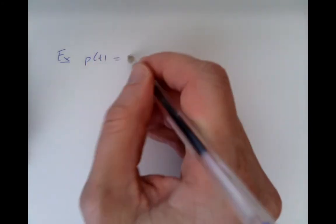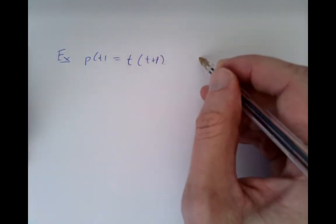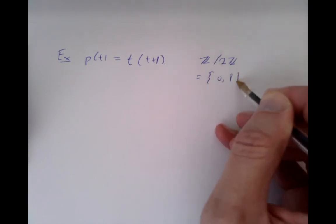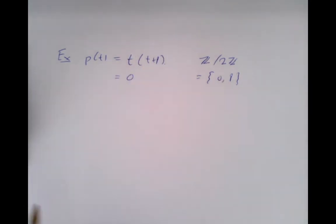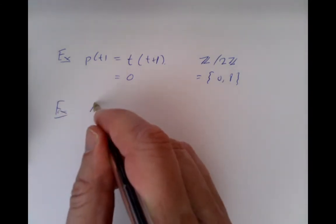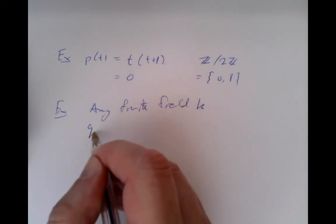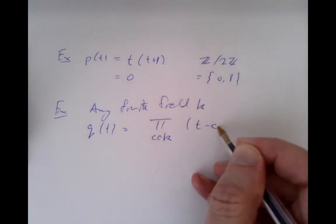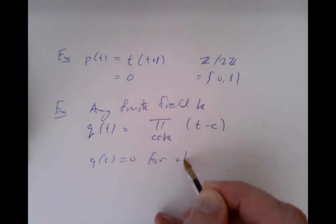A problem we've noticed before is that sometimes a polynomial function might vanish for all values in a particular field. For instance, if we look at this polynomial in the variable t, where we're allowing values inside the field Z mod 2Z — the remainders of the integers when we mod out by the evens — this vanishes whatever t we plug in, whether t is 0 or 1. Similarly, over any finite field, we could consider the polynomial q of t equal to the product of all values (t minus c) for all c in the field, and q of c is 0 for all c in the field.